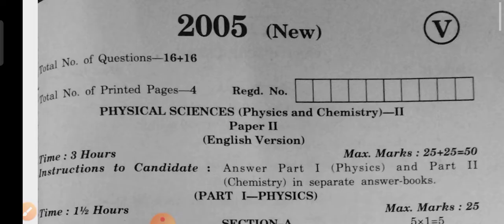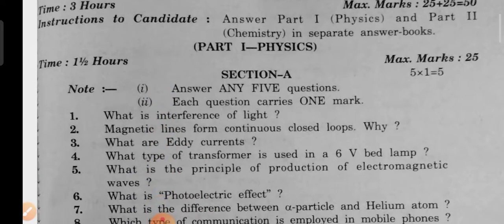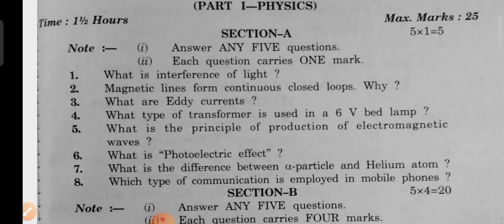The question paper in this video. Section A questions: What is the interference of light? Magnetic lines form continuous closed loops - why? What are eddy currents? What type of transformer is used in a CFL lamp? What is the principle of production of electromagnetic waves? What is the photoelectric effect? What is the difference between an alpha particle and a helium atom? Which type of communication is employed in a mobile phone?